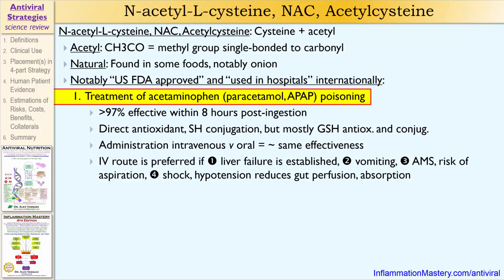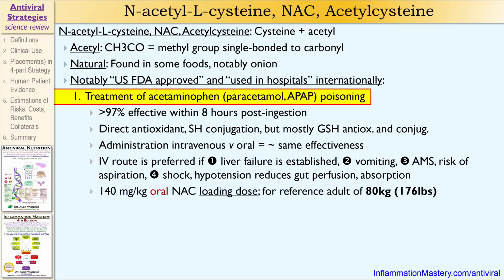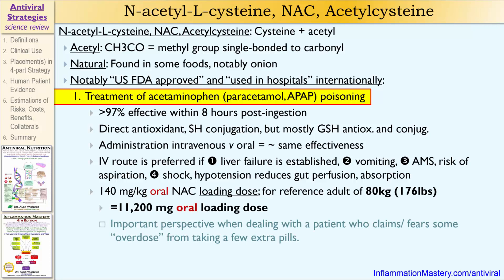The typical loading dose for orally administered NAC after poisoning is 140 milligrams per kilogram, which comes out to about 11 grams for an oral loading dose. This is not for everyday use — this is for the clinical setting of acute poisoning and impending liver failure.